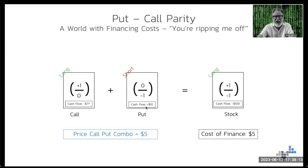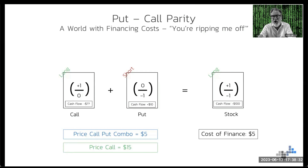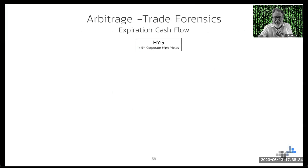So you already know here that when you have a price for the put but no price for the call on the screen, and you know that the cost of finance is $5, you know that the price of the call has to be $15, because this has to be equivalent to each other in a world where there's no arbitrage possible. Obviously, we're interested in arbitrage, where we can make money by buying and selling the same product at different prices.